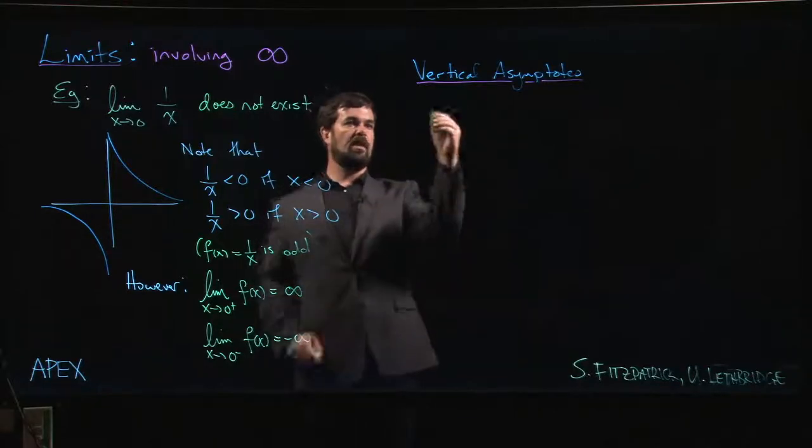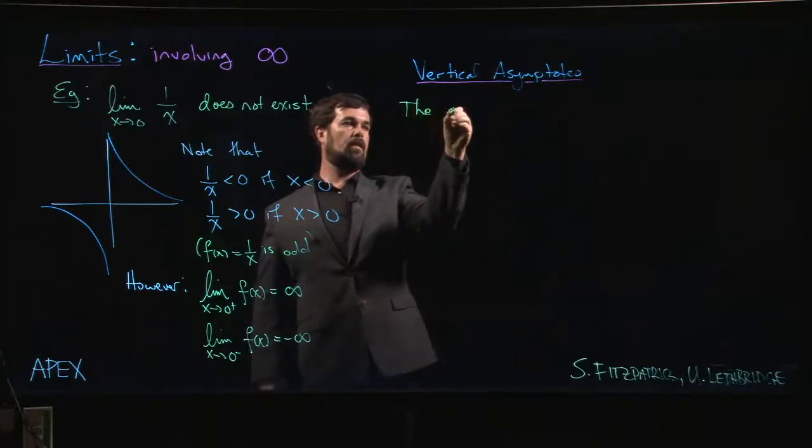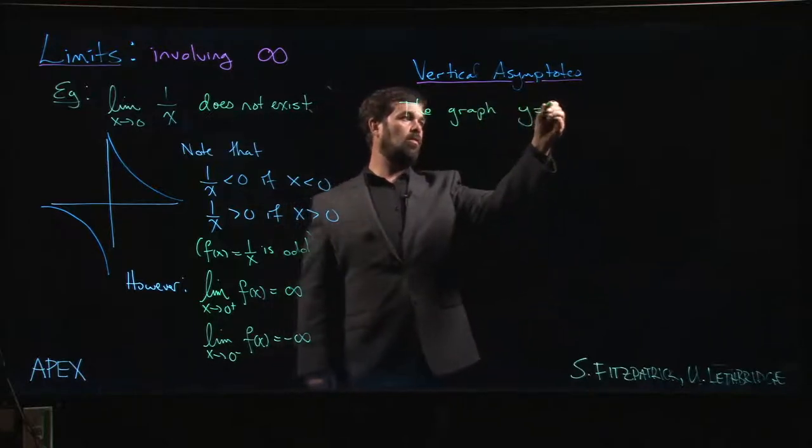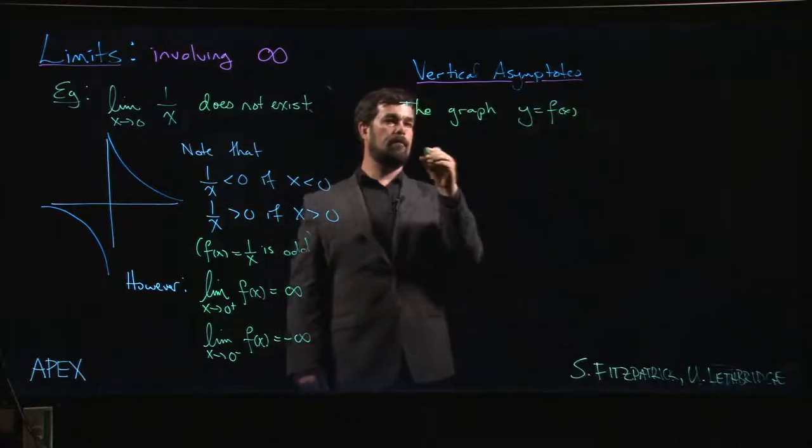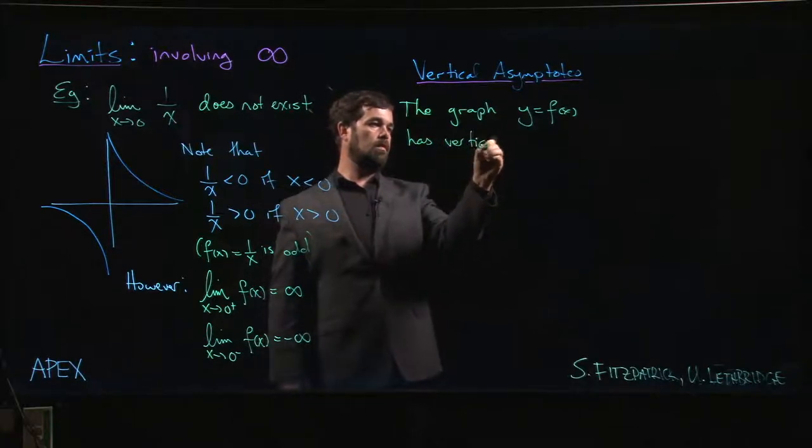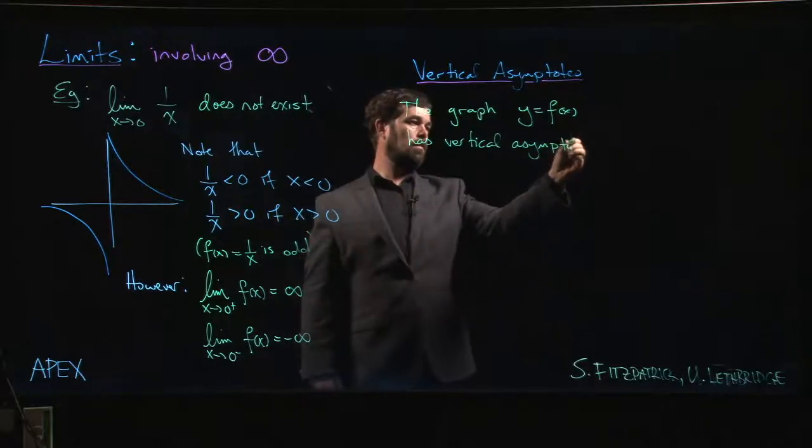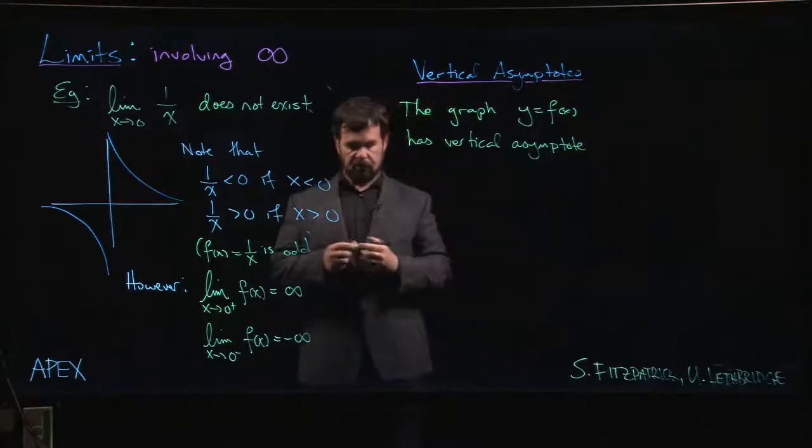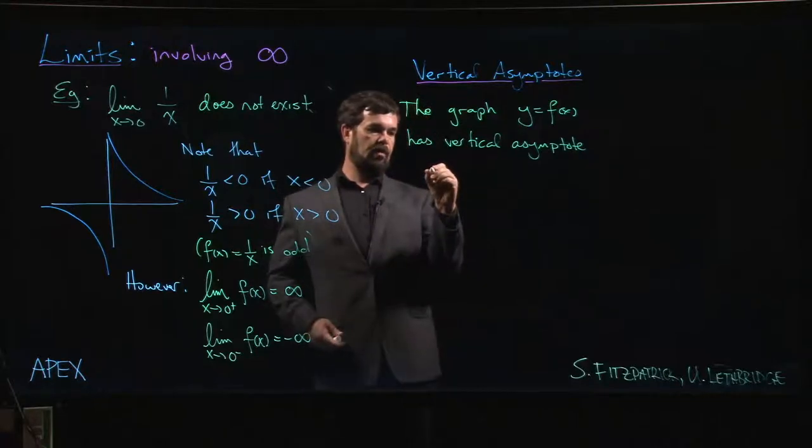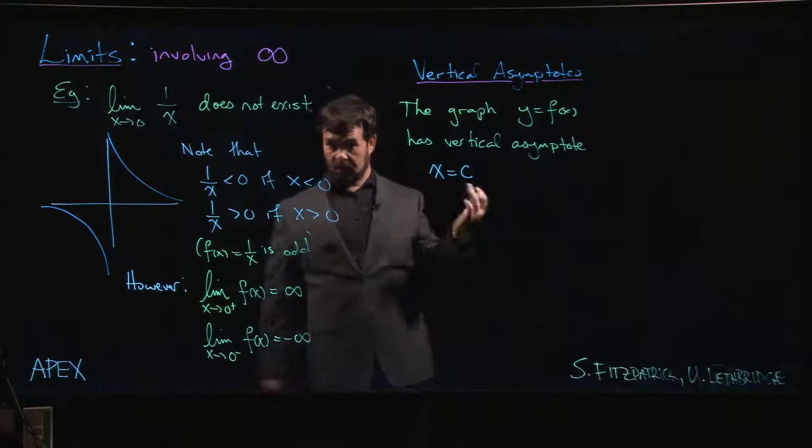We can say the following: a graph, say y equals f of x, has a vertical asymptote. A vertical asymptote is a vertical line with an equation of the form x equals c, where x is just a constant value.